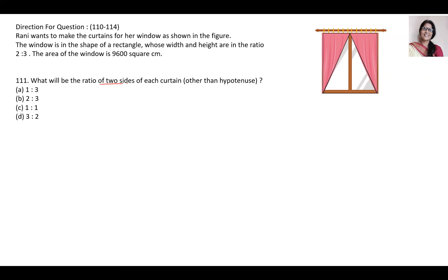What will be the ratio of two sides of each curtain other than hypotenuse? That means the question is about AB and AC, ratio of AB to AC. Read the question mindfully. Rani wants to make curtains for her window as shown in the figure. The window is in shape of rectangle whose width and height are in ratio 2 to 3. That means AD is equal to 2 and AC is equal to 3.